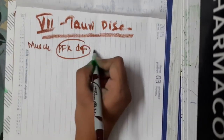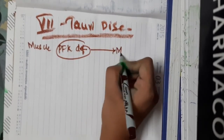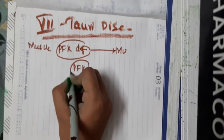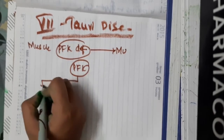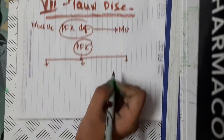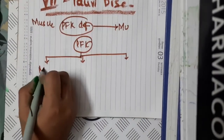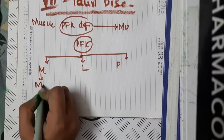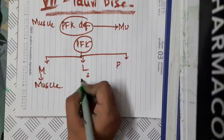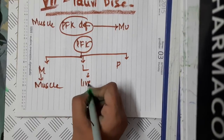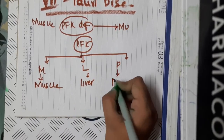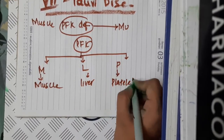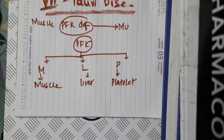Phosphofructokinase has mainly three isoforms: M, L, and P. M is present in muscles, L is phosphofructokinase in liver, and P is the phosphofructokinase which is present in platelets.